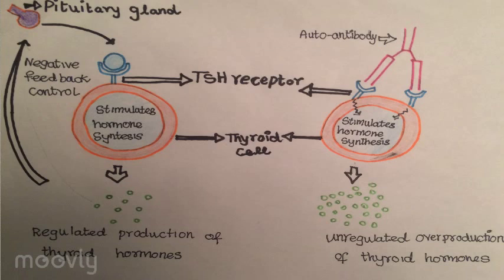These same antibodies may also be involved in the eye changes seen in Graves' — ophthalmopathy — since the receptors on the thyroid may also be found on the surface cells behind the eye. Physicians have long suspected that severe emotional stress, such as the death of a loved one, can set off the disease in some patients.